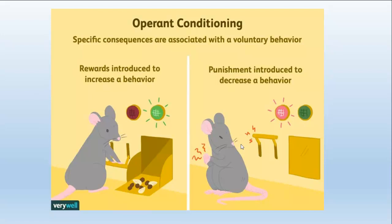If the mouse pushes the green button, food comes out from the wall. But if it pushes the red button, an electric shock is released and the mouse feels pain. Every time the mouse pushes the red button, it gets electrified, so the mouse becomes scared and will never push the red button again. But since the green button produces food, the mouse will always click the green button. This is operant conditioning.